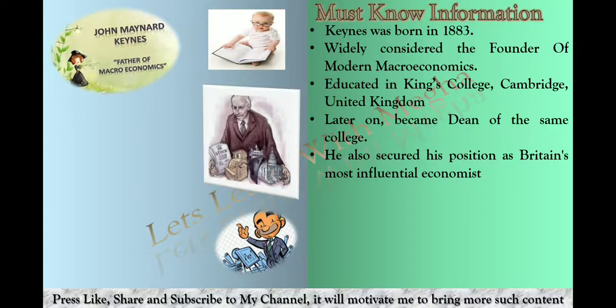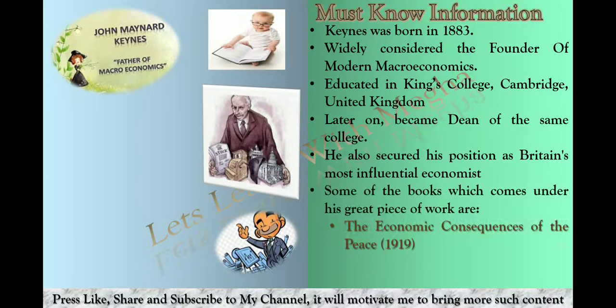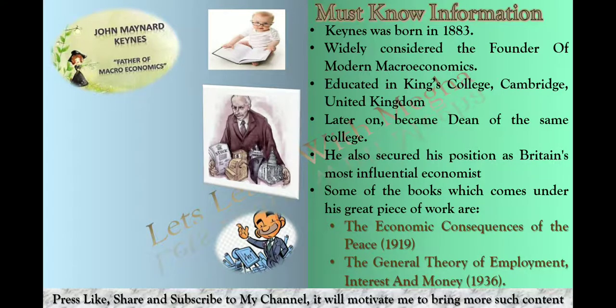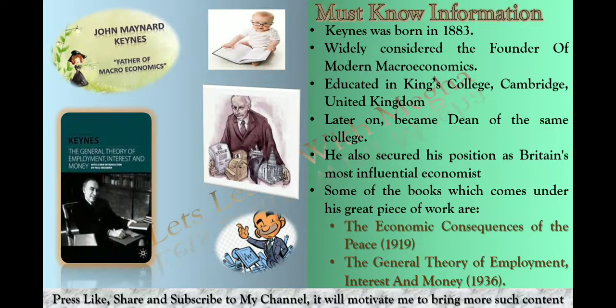His great works include two important books. One is The Economic Consequences of the Peace, published in 1919, and the other is The General Theory of Employment, Interest and Money, also known as the General Theory. We have already discussed this in a separate video about the Great Depression and macroeconomics as a separate branch. I will give you a link in the description box.